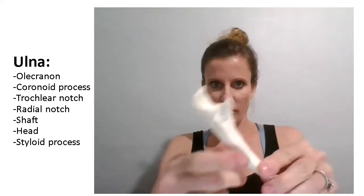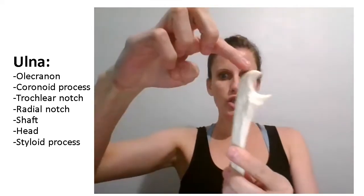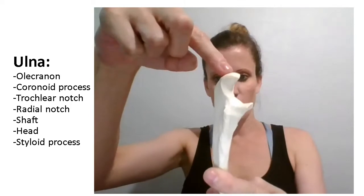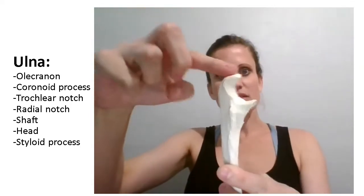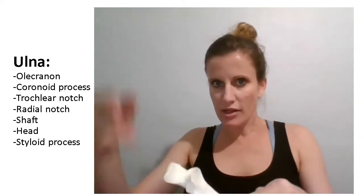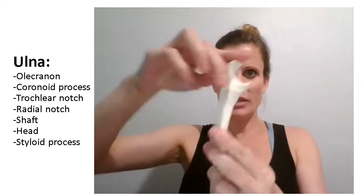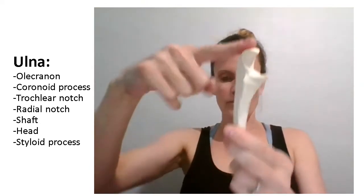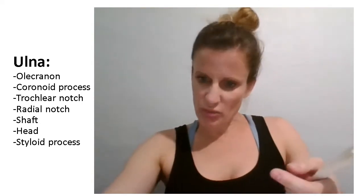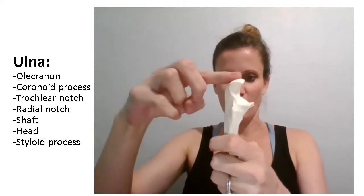Looking at the top of the ulna, you have these two processes. The larger process — this top, superior process — is called the olecranon. This is the process that fits into the olecranon fossa, the little depression that's on the back of the humerus. This one up top is the olecranon. It's also this part of your elbow, the bony part that sticks out. When you push your elbow down, that little bony ridge is the olecranon.